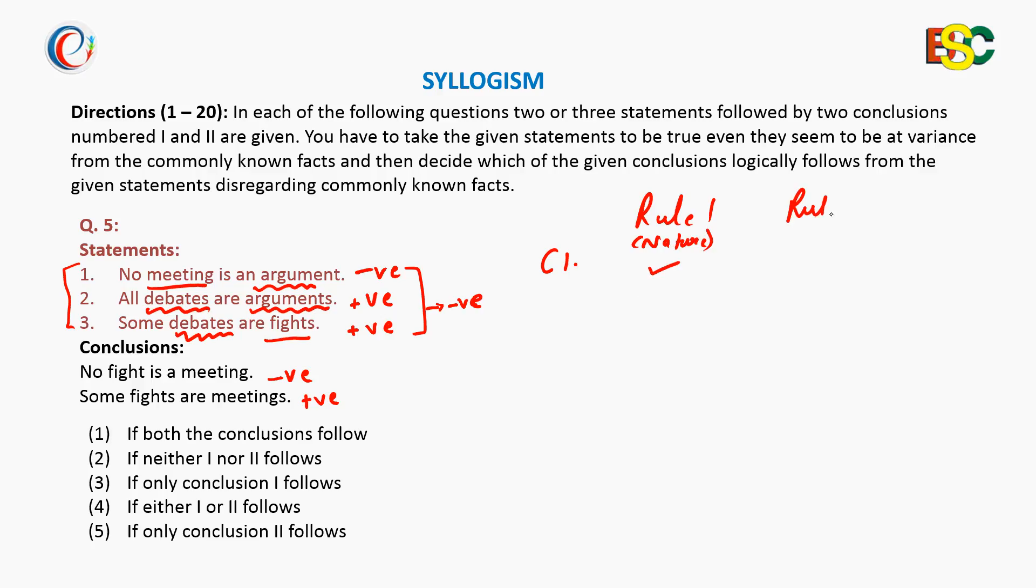Then rule 2 is of percentage criteria. Checking percentage criteria, in conclusion we want the percentage as 100% and 100%. In the statement, the fight's percentage is only 50%. So we can straight away say that rule 2 is not passed and we need not check the percentage of meeting as fight's percentage is not matched. Definitely this conclusion is not followed as rule 2 is not passed here.